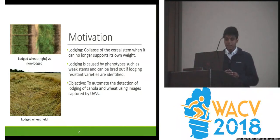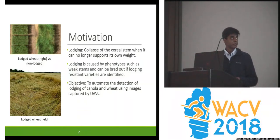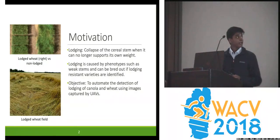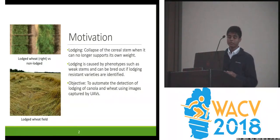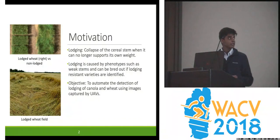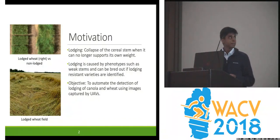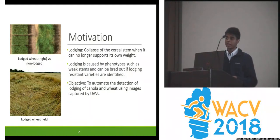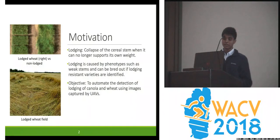This is mainly caused by phenotypes such as weak stems and weak root systems, and can be bred out if those phenotypes are identified. In order to create lodging-resistant varieties, plant breeders conduct large field trials to identify these phenotypes. Currently, the classification of lodging is done by human inspection, which can be both time consuming and subjective.